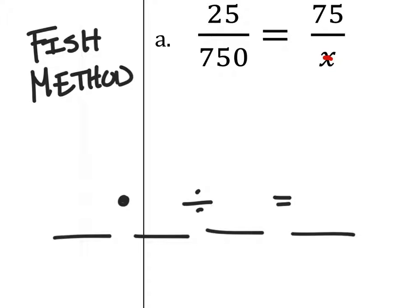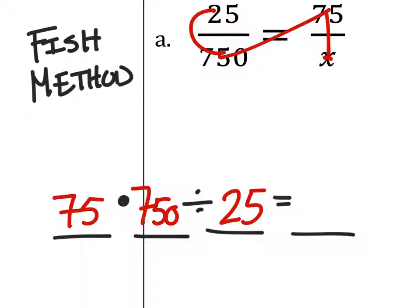Then we start with the x, and we go up. That's our first value, the 75. We'll go cross down diagonally to the 750. And then we'll come up, round a count, to the 25. That's our third value, and we end at the x, which gives us a nice fish pattern.